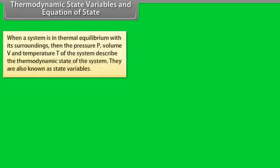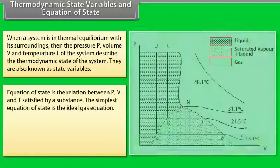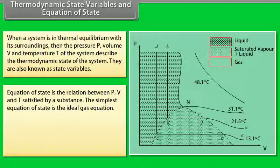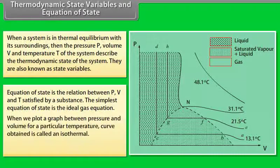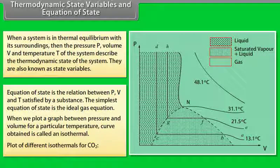Thermodynamic state variables and equation of state. When a system is in thermal equilibrium, the pressure P, volume V, and temperature T describe the thermodynamic state of the system; they are called state variables. The equation of state is the relation between P, V, and T satisfied by a substance. The simplest equation of state is the ideal gas equation. A graph between pressure and volume at a particular temperature gives a curve called an isotherm. A plot of different isothermals for CO₂ is shown in the graph.